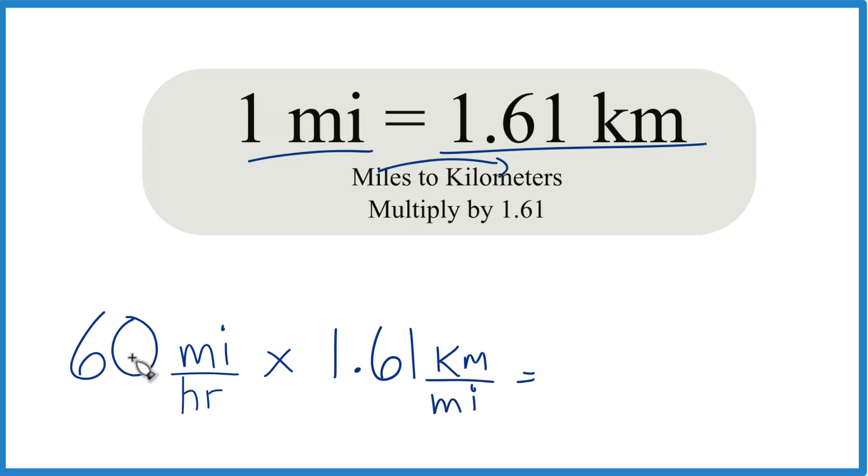Now all we do is multiply 60 times 1.61. We get 96.6. And because we have miles here on top and over here on the bottom, they cancel out. We're left with kilometers per hour. That's what we're looking for.